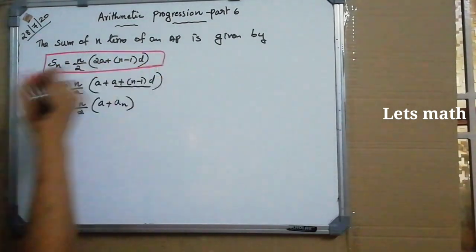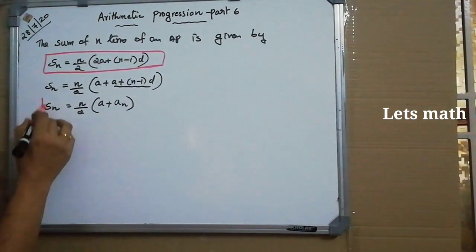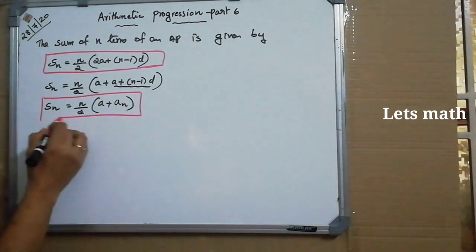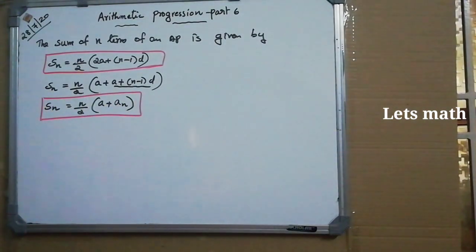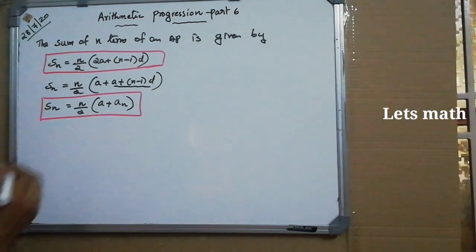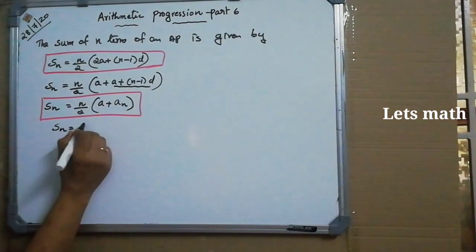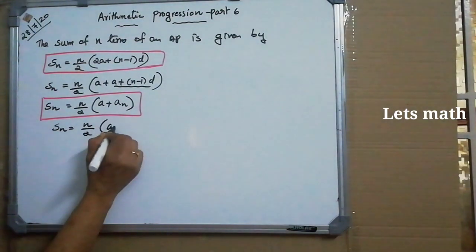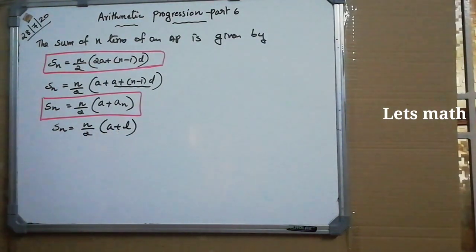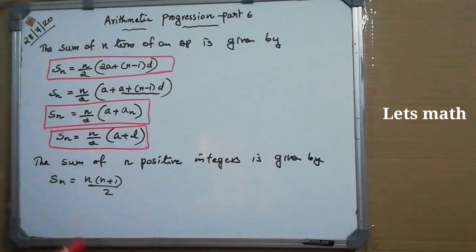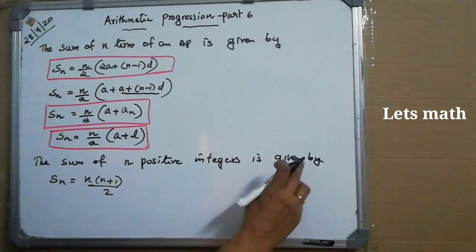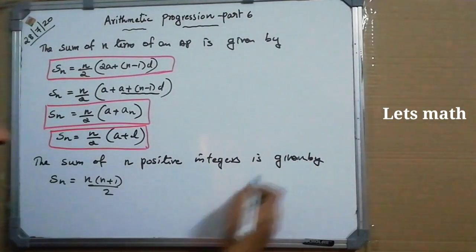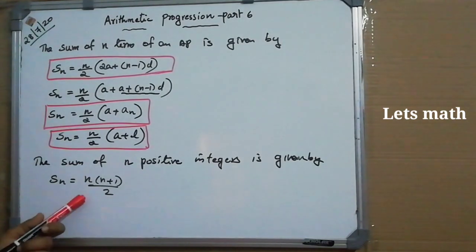To summarize: Sn = N/2 × (A + An), or equivalently, Sn = N/2 × (A + last term). The sum of the first N positive integers is given by N(N+1)/2, which we already verified: for N=100, it is 100 × 101 / 2 = 5050.